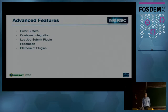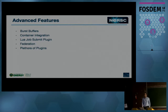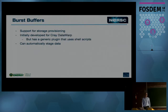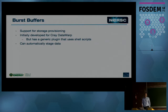Slurm also has advanced features. It has burst buffers and integrates with containers — not only by executing Docker directly, but via a plugin. There's a job submit plugin that can rewrite the job when you submit it. It can federate, meaning you can run several controllers and submit a job that gets sent to any controller. There are also a relatively extensive set of plugins. Burst buffers were developed with input from NERSC — we use them to provision storage for the Cray DataWarp system. When you launch a job you can say you want, say, 500 terabytes of SSD and use that inside the job. You can also use a generic plugin with shell scripts to provision whatever you want and automatically stage data in and out.